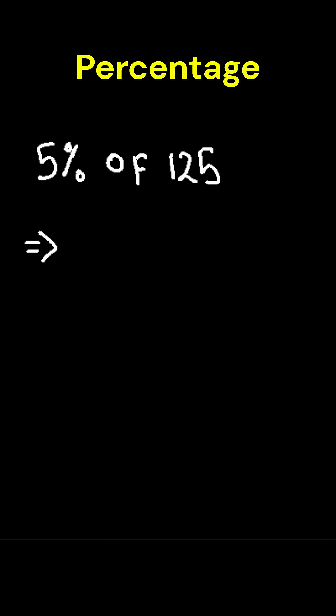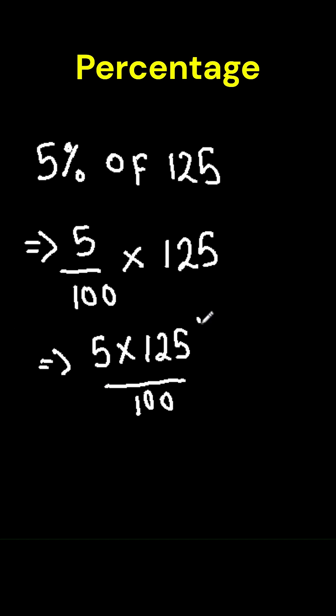Let's try another example. 5% of 125 which is 5 divided by 100 and multiply by 125. That's 5 times 125 which equals 625 divided by 100. Simplify that and you get 6.25.